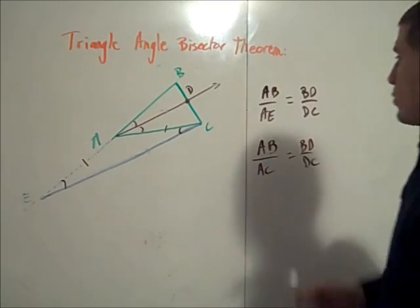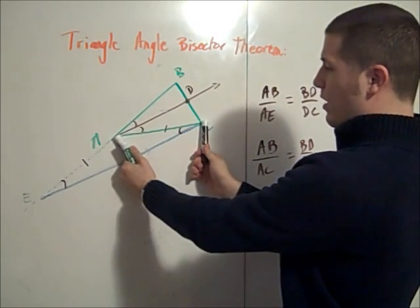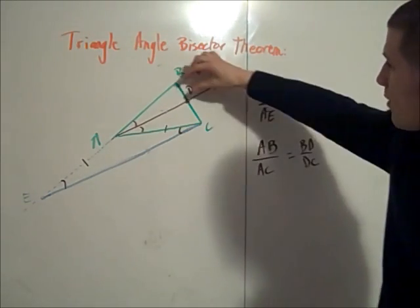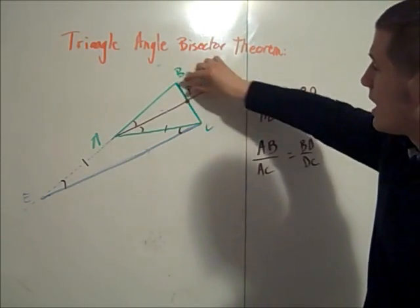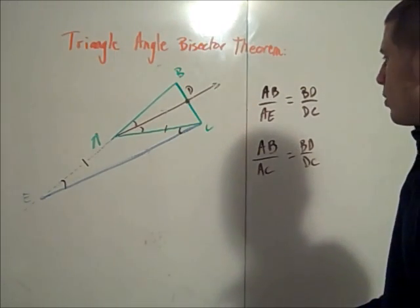Well that's exactly what I was trying to show, that AB over AC, the ratio of these two sides of the triangle, is equal to the ratio of BD over DC, those segments where that third side was cut. And so we see that the triangle angle bisector theorem holds.